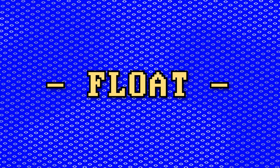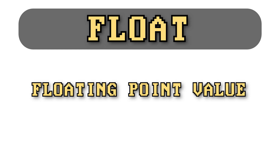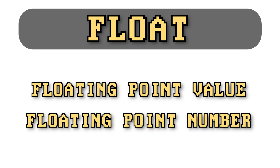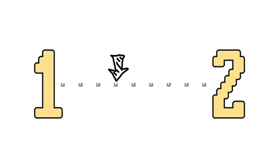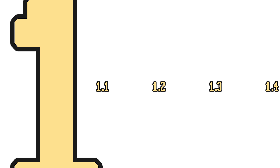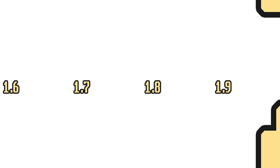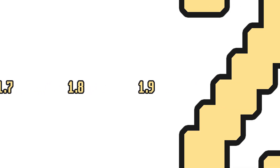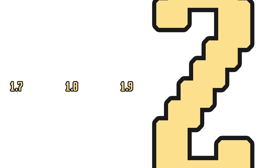Let's talk about floats. Floats stand for floating point values or floating point numbers — pretty much the same thing. You can think of them as numbers that float somewhere in between integers. So if one and two are integers with two coming right after one, then a float makes up all the numbers in between: 1.1, 1.2, 1.3, 1.4, 1.5, all the way to 1.9.